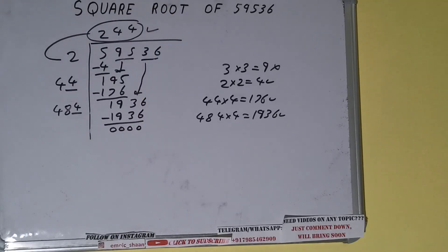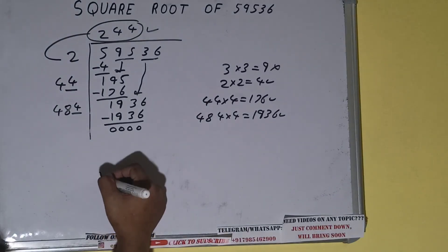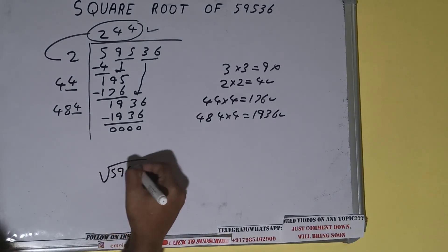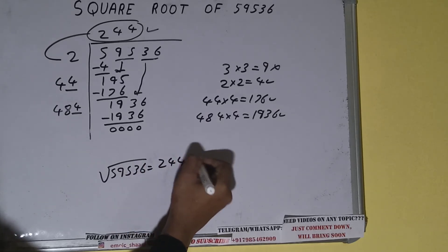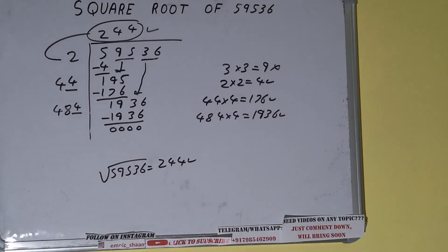Once we got 0, whatever is in the quotient will be the answer, that is 244. So the square root of 59536 will be 244. That's it. If you found the video helpful, please do hit the like button, do consider subscribing, and thanks for watching.